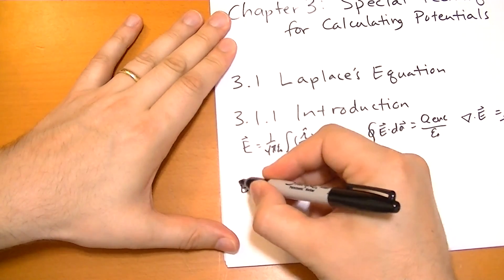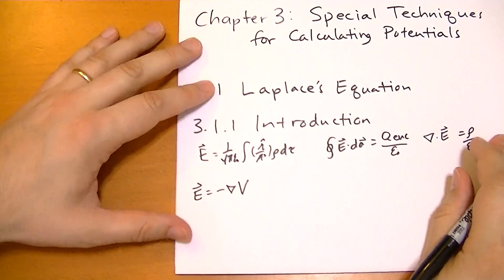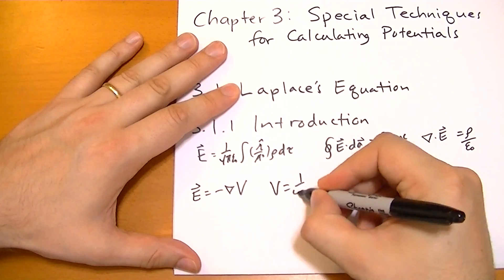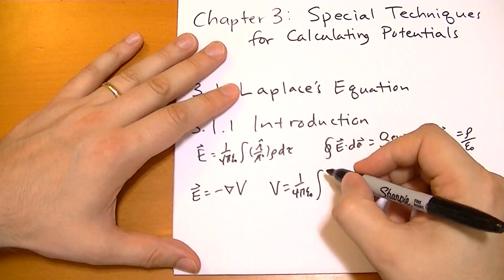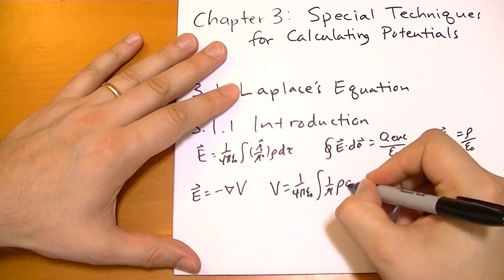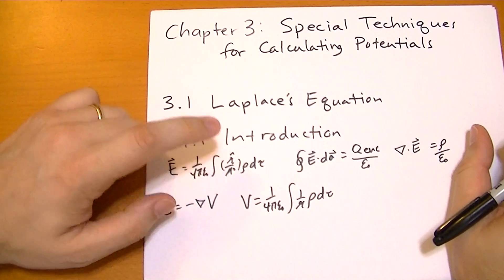We said the E vector is equal to minus the grad of some scalar field V, which is the potential. And you can solve for the potential with this simple formula of 1 over 4 pi epsilon naught integral of 1 over r times rho d tau. This is a little better because you're not dealing with vectors.